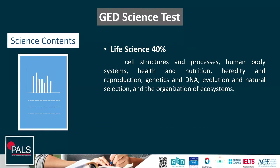Now, science contents. The content areas can be categorized into three subjects. The first one is life science, which includes cell structures and processes, human body systems, health and nutrition, heredity and reproduction, genetics and DNA, evolution and natural selection, and the organization of ecosystems.